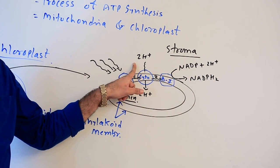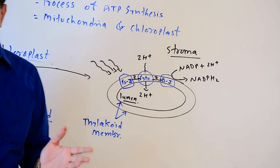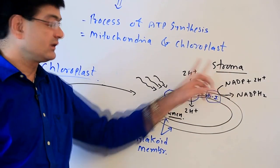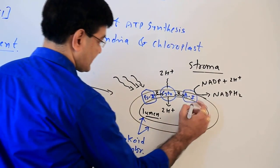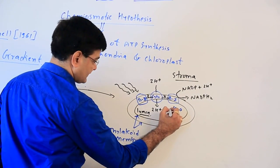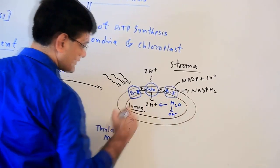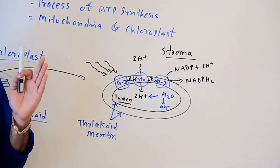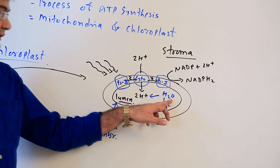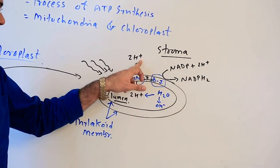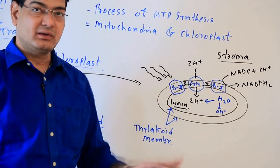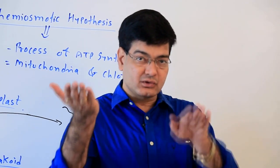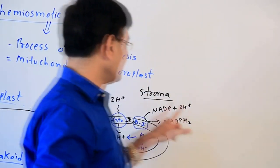There are two main processes occurring here. First, 2H+ from the stroma enter the lumen, so protons in the stroma decrease. Second, in the lumen, photolysis of water produces H+ and OH−, causing H+ to increase in the lumen. Due to photolysis, H+ increases in the lumen, and due to NADP reduction and diffusion of H+ into the lumen, H+ in the stroma decreases. This way a gradient develops between the stroma and the lumen.